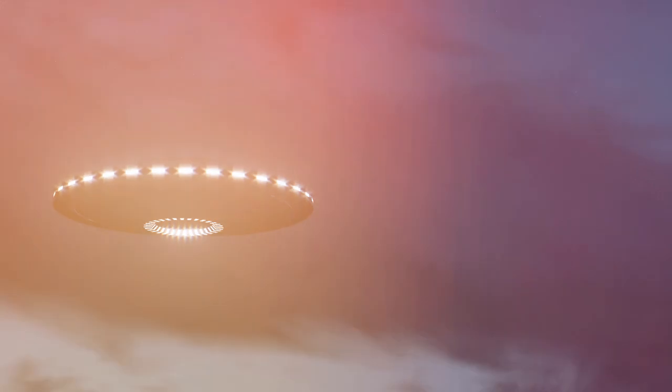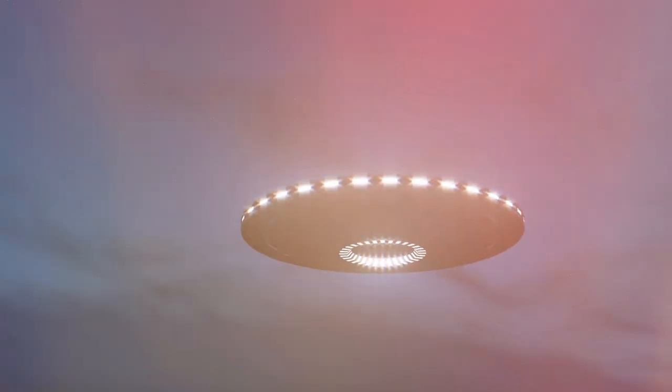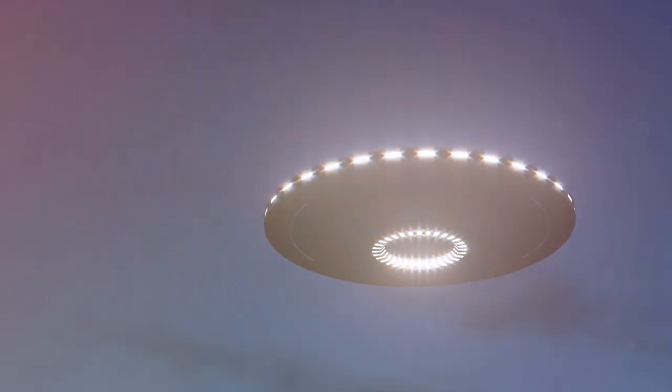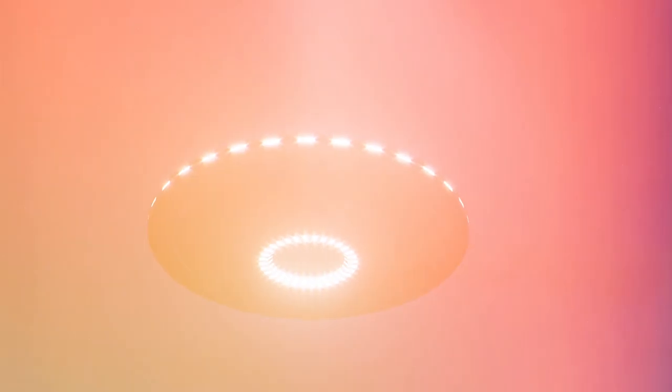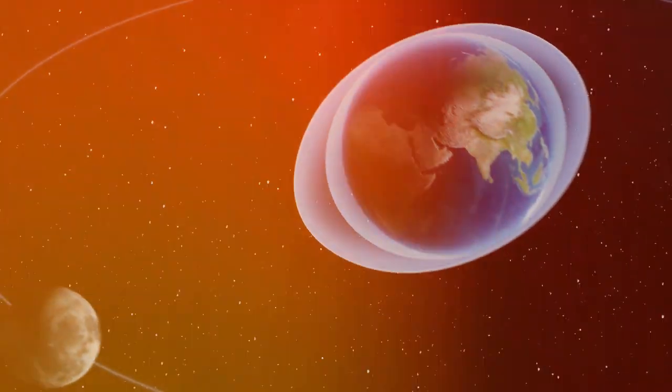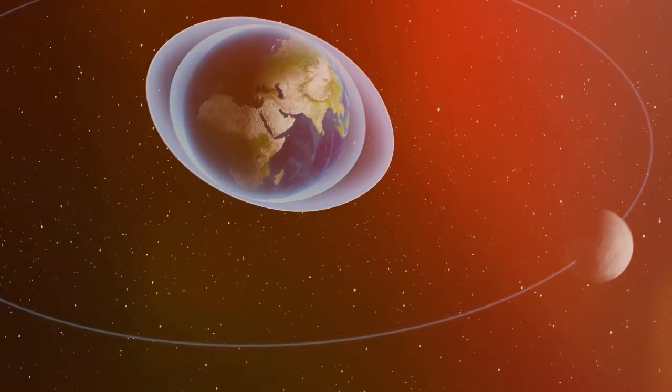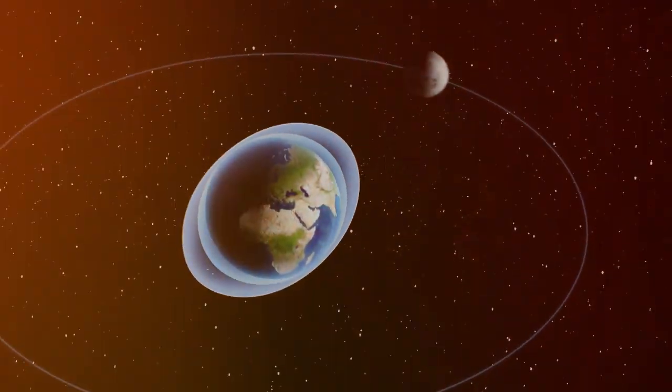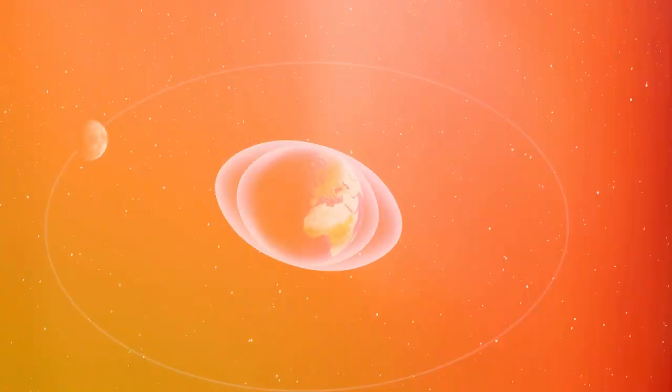A space rock is about to become Earth's new mini moon. The newly discovered asteroid named 2024 pt-5 will temporarily be captured by Earth's gravity and orbit our world from September 29th to November 25th according to astronomers. Then the space rock will return to a heliocentric orbit, which is an orbit around the sun.